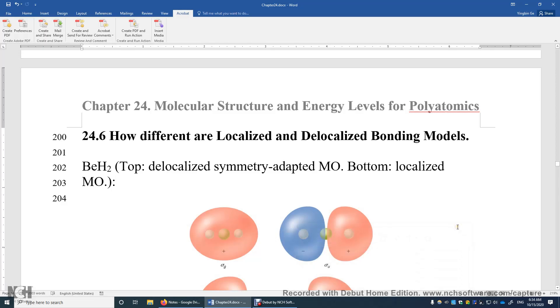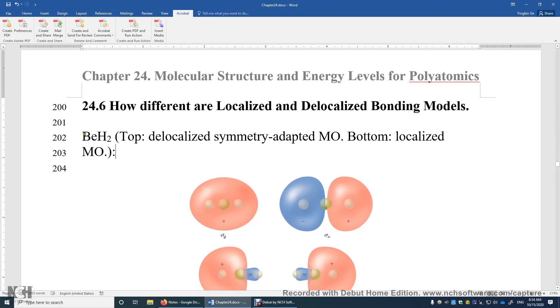Section 24.6: How Different Are Localized and Delocalized Bonding Models. Beryllium hydride is a linear molecule that belongs to the D infinity H point group.